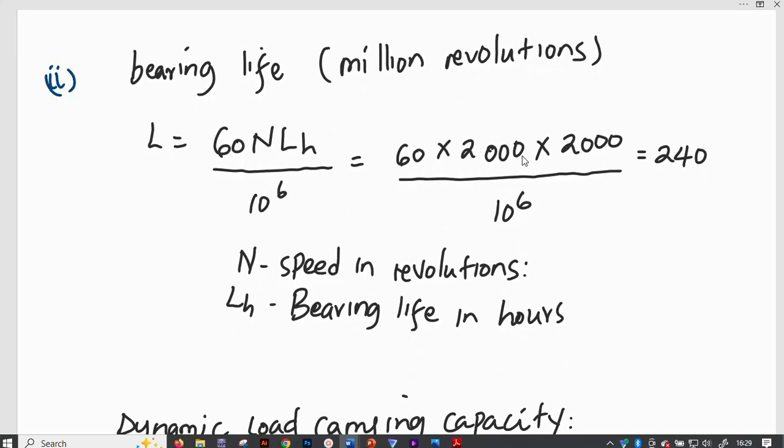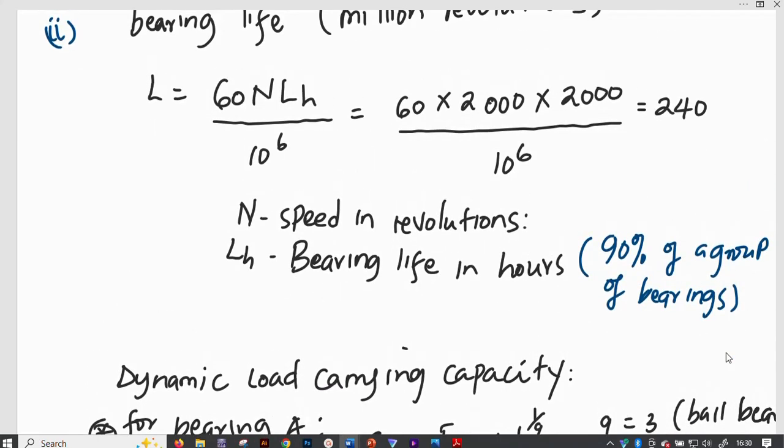Then we need to calculate for bearing life. Now the bearing life in a million revolutions is defined by L equals 60 times N times LH divided by 10 to the power 6. This N is the number of revolutions per minute. LH is the number of hours or the service life or the bearing life in hours that has been taken for at least 90% of a group of bearings. Therefore, we find that we will have 60 times 2,000, which is N, and we have also the bearing life as 2,000 hours divided by 10 to the power 6, we will have 240 million revolutions.